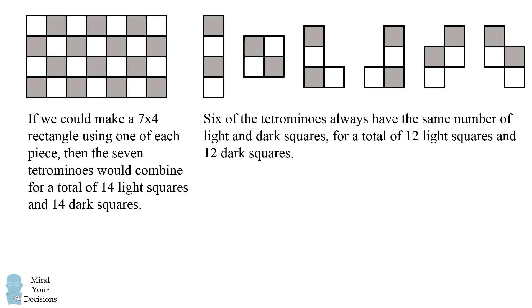But six of the tetrominoes always have the same number of light and dark squares, for a total of 12 light squares and 12 dark squares.